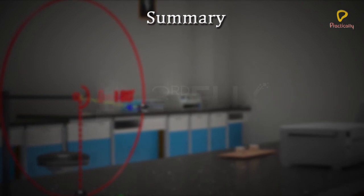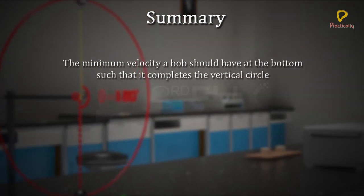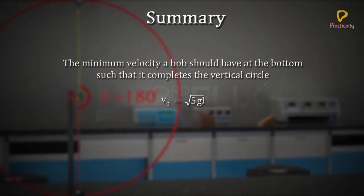Summary: The minimum velocity a bob should have at the lowest point, such that it completes the vertical circle, is root over 5 gl.